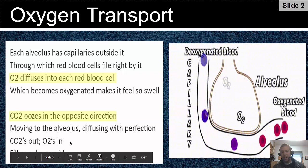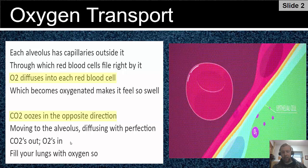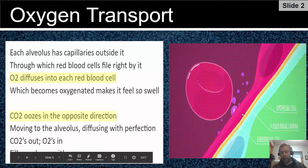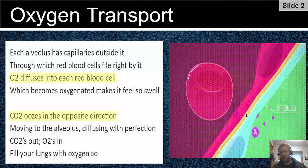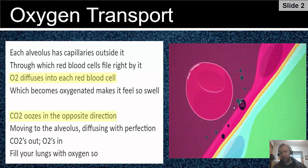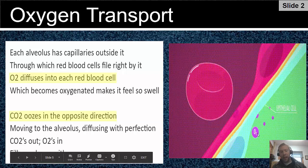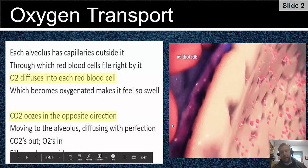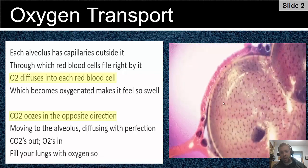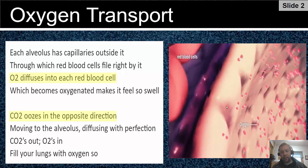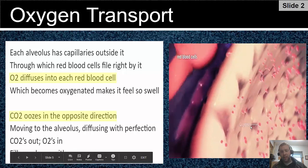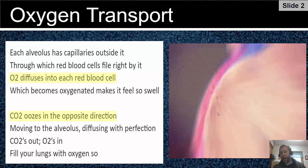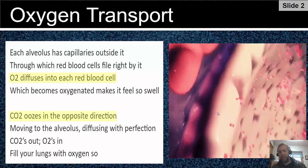Here's another diagram of that happening. From your alveoli comes the oxygen; from your red blood cells diffuses the carbon dioxide. So your alveoli are diffusing oxygen to the red blood cell, and the red blood cell is diffusing carbon dioxide back to the alveoli. You can even see a better diagram where the oxygen molecules diffuse to the red blood cells as they file by — it's just a natural movement of oxygen into your red blood cells as they pass your alveoli.